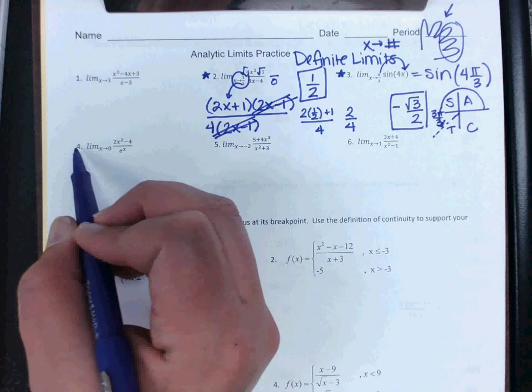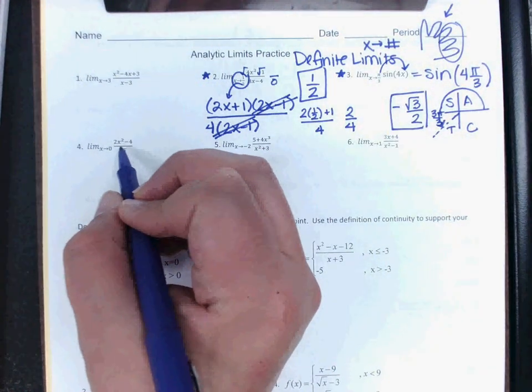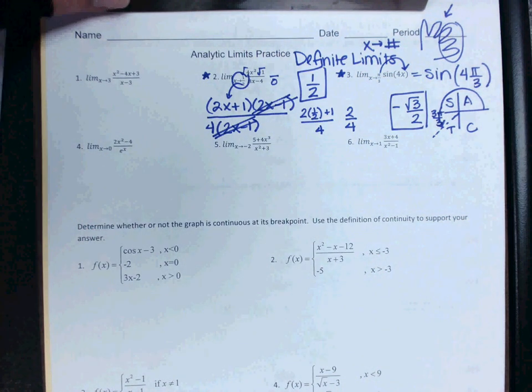Also, number 4, when you plug in 0 here, you should not get a divide by 0, because remember e to the 0 is going to be a 1 on the bottom. Alright, come down to the next section, please.